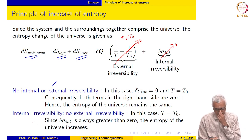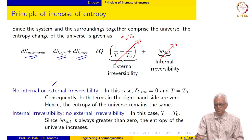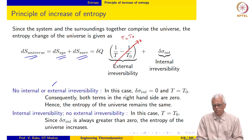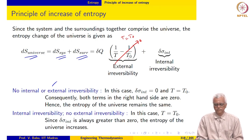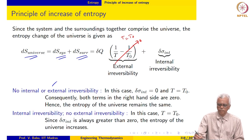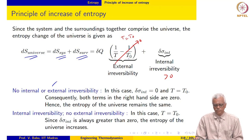The second possibility is when we have internal irreversibility but no external irreversibility. Since delta sigma int is always greater than or equal to zero, and we now have internal irreversibility, this term is positive, so the entropy of the universe increases in this case.